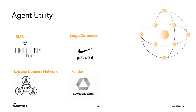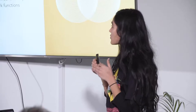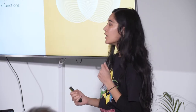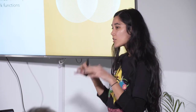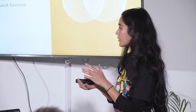Some examples of what they could look like: maybe a cotton farmer is a small-sized business doing business with Nike. They might use a system — Nike uses a system for invoicing called TradeShift actually — and maybe Comfortz Bank is funding that invoice. The token model is then providing the underlying security for our platform. We want it to provide a distributed network of agents and also give an additional incentive to perform these critical network functions early on. It's the initial conditions of our system that also matter, so providing an incentive to do all of these things right at launch is going to be critical.